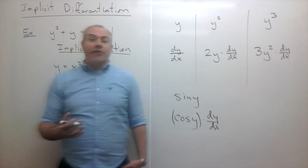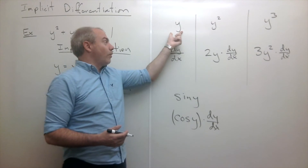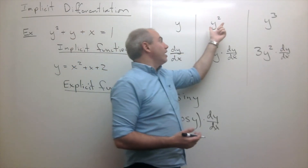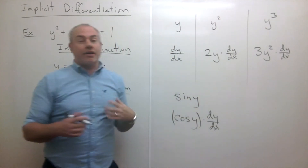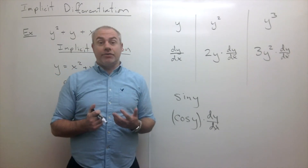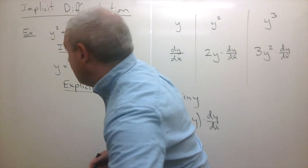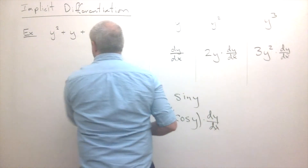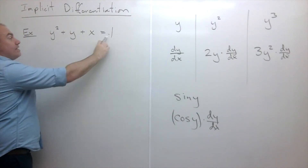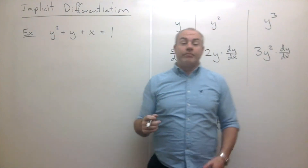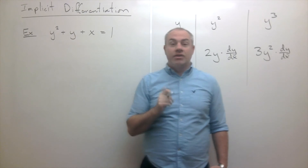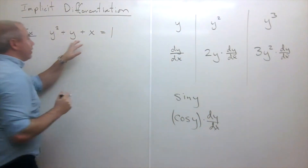So we have a good feel for taking derivatives of things involving y. If I have a single y, the derivative is just dy/dx. If I have y to an exponent or sine of y, I use the chain rule. Let's go back to the original implicit function and take the derivative. There are two sides to this equation, and even if I can't solve for y, I can still differentiate everything as it is.